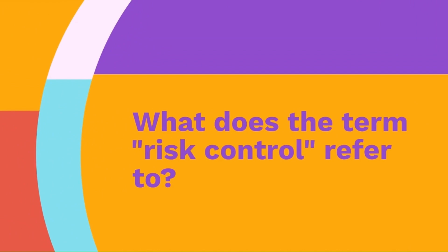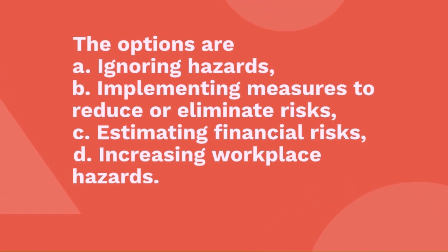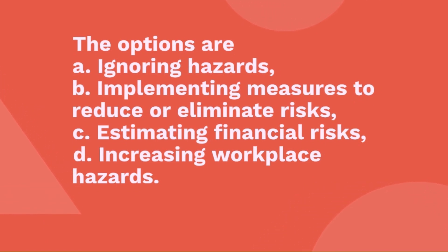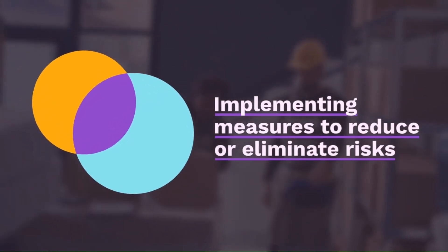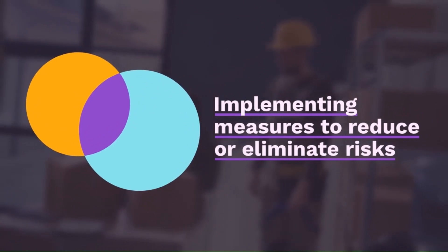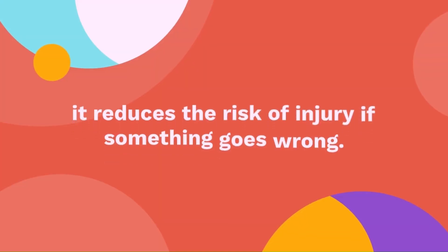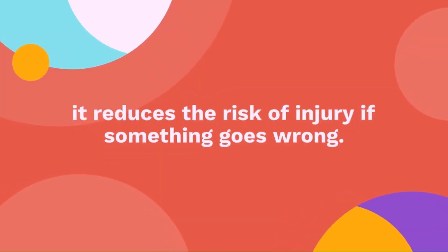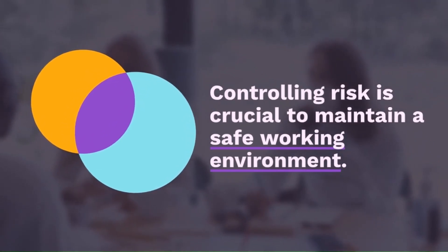Question 13: What does the term 'risk control' refer to? The options are: ignoring hazards, implementing measures to reduce or eliminate risks, estimating financial risks, or increasing workplace hazards. The correct answer is implementing measures to reduce or eliminate risks. Risk control is like putting on a seatbelt before driving — it reduces the risk of injury if something goes wrong. Controlling risk is crucial to maintaining a safe working environment.